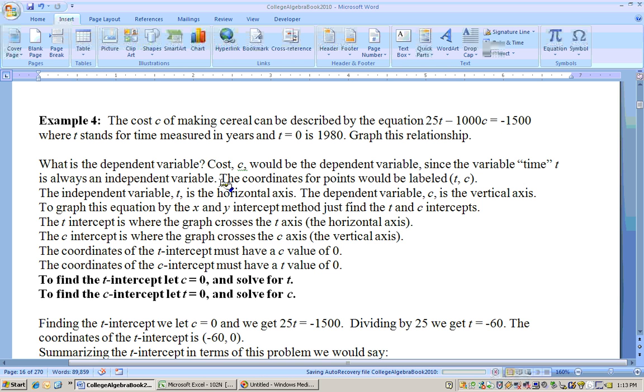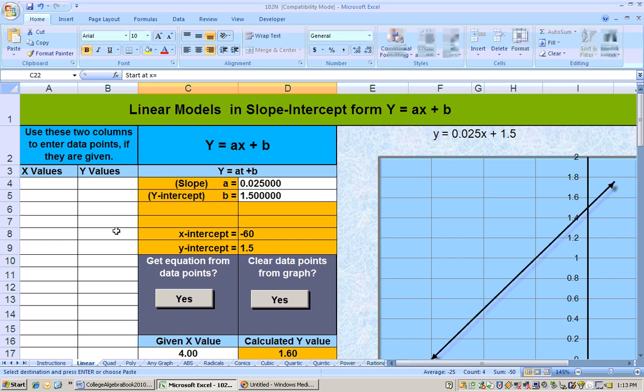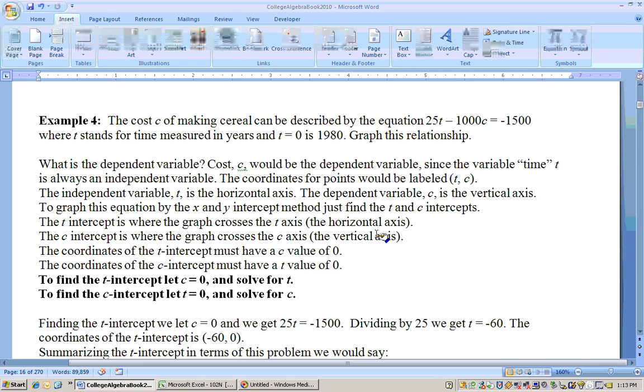Let's get down to getting the X and Y intercept. The T intercept or X intercept is where the graph crosses the horizontal axis, and the C intercept is where it crosses the vertical axis.